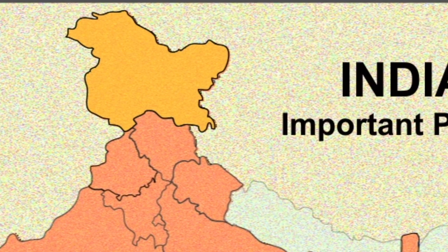Here the first pass is the Aghil Pass. It is a pass crossing in the Aghil mountains, which lies to the north of the Karakoram range.